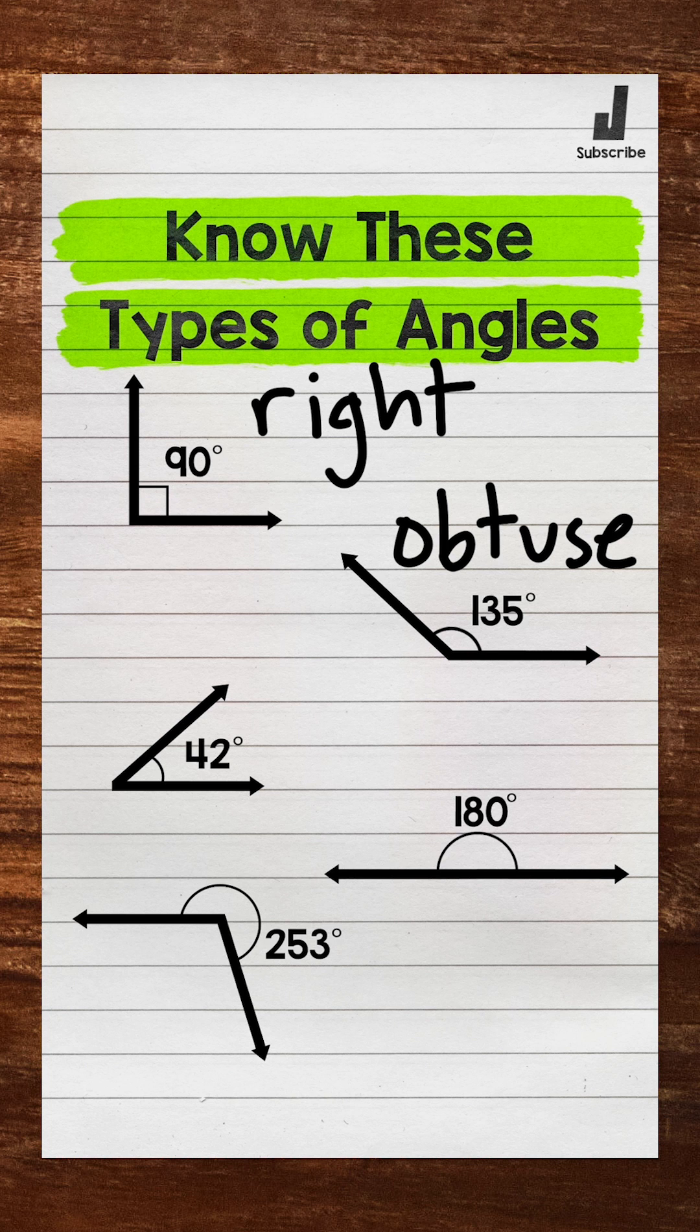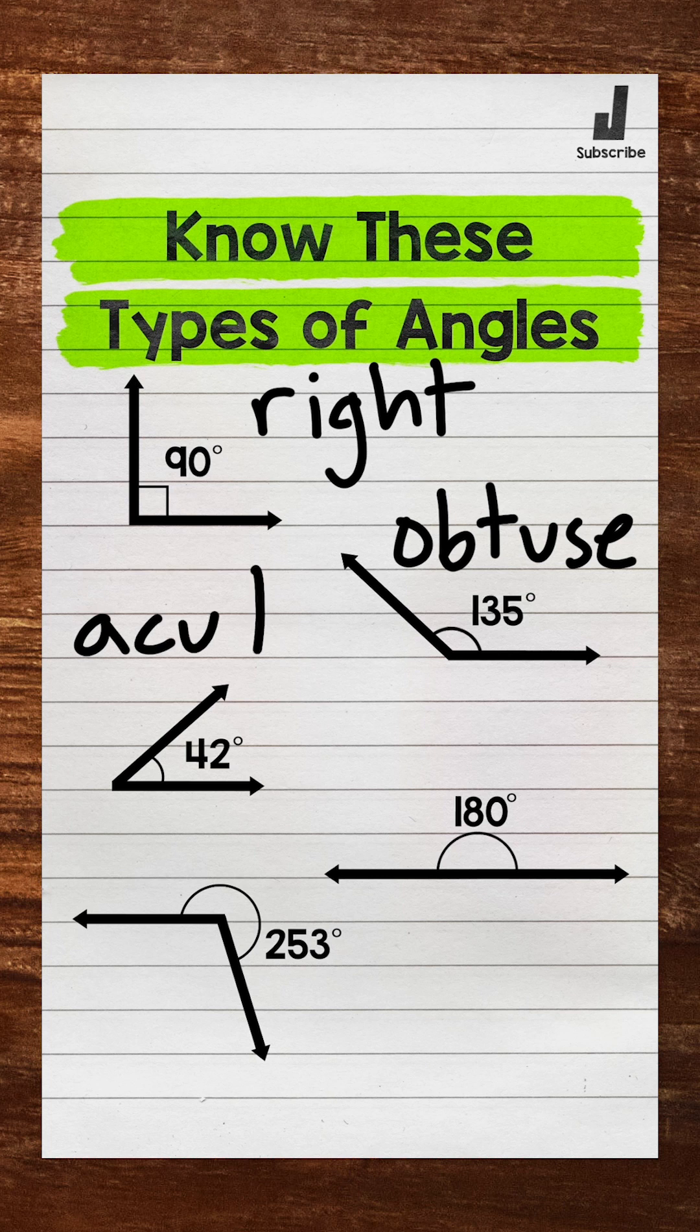Next, we have an angle that is 42 degrees. This is an example of an acute angle. Acute angles are less than 90 degrees.